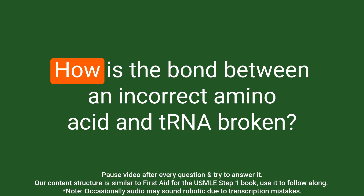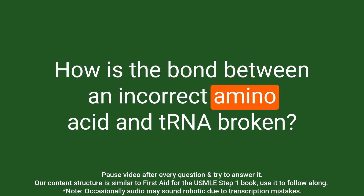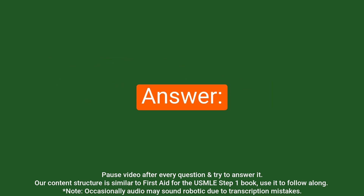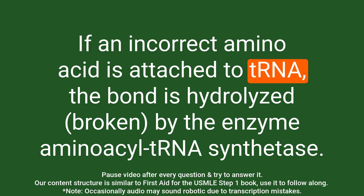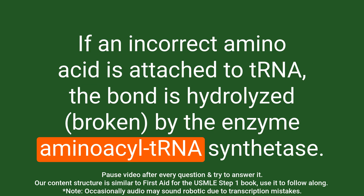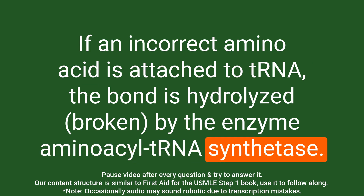Question: How is the bond between an incorrect amino acid and tRNA broken? Answer: If an incorrect amino acid is attached to tRNA, the bond is hydrolyzed by the enzyme aminoacyl-tRNA synthetase.